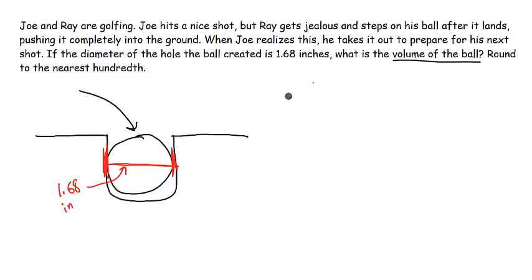And if we know that the golf ball is a sphere, then we could use the formula for a volume of a sphere. So now we have to plug in the only thing we have to actually plug in, which is the radius, because it's 4 over 3 times pi times radius cubed.